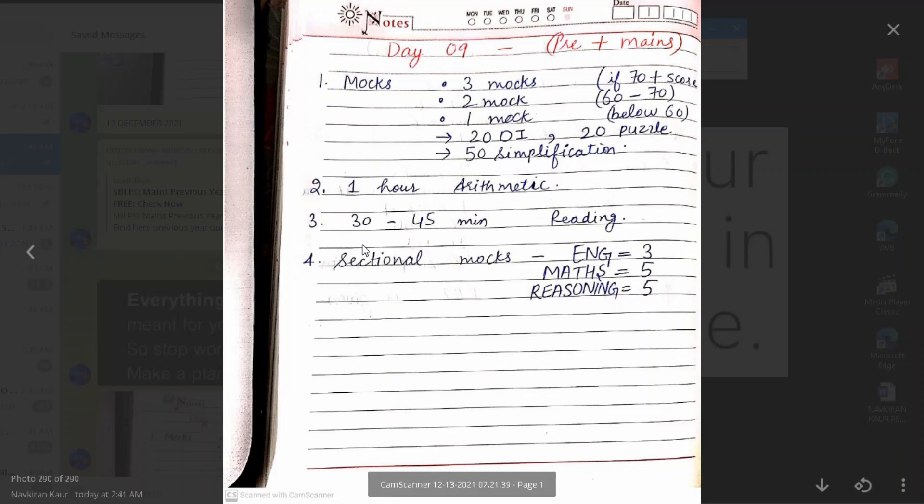Then what you have to do is, you have to do 30 to 45 minutes reading. And 1 hour arithmetic, first you will cover your basics. And then you will solve 20 to 25 questions of arithmetic from that topic only.